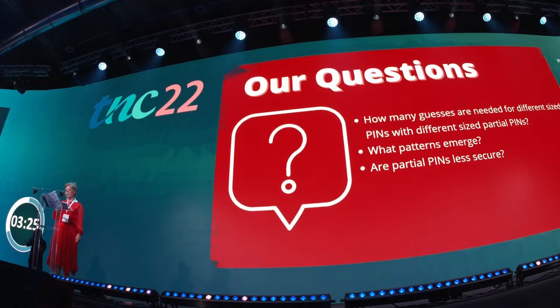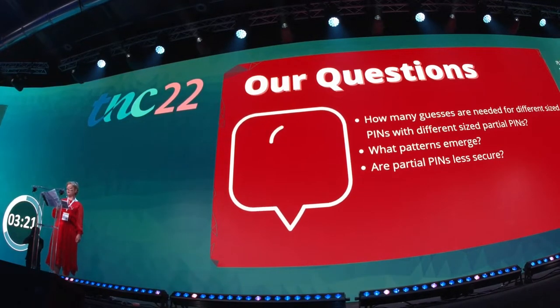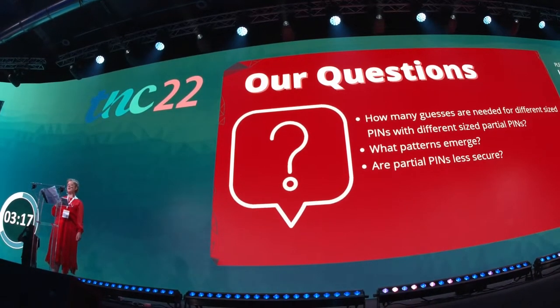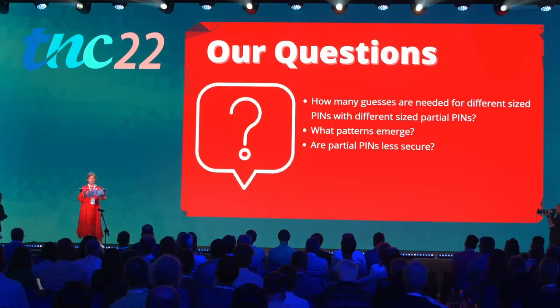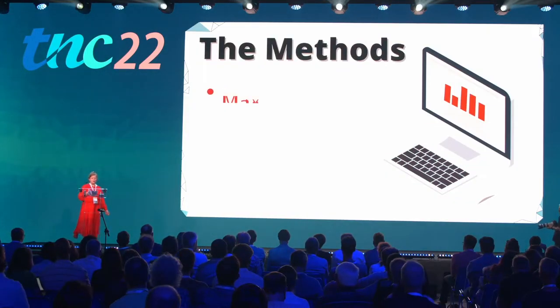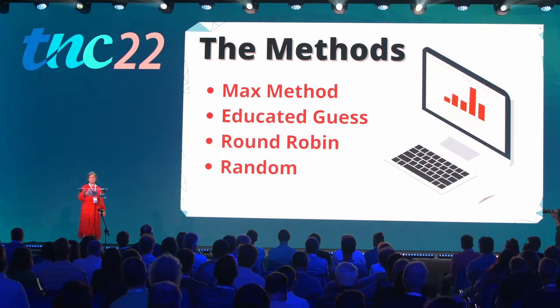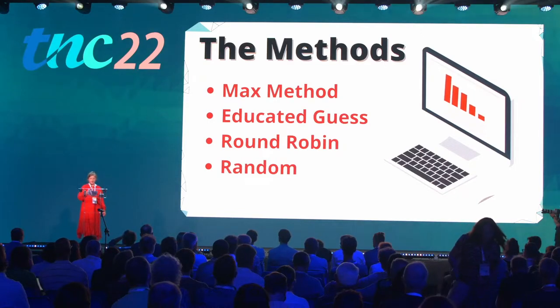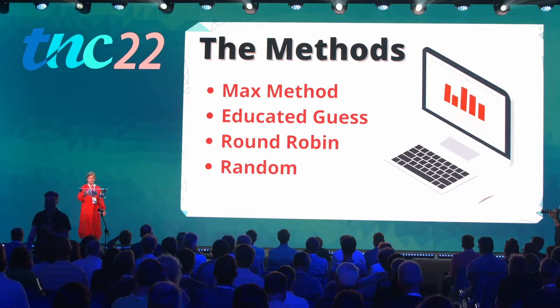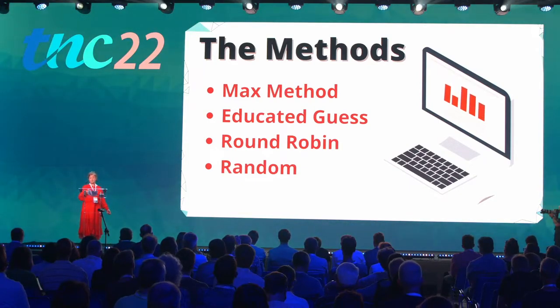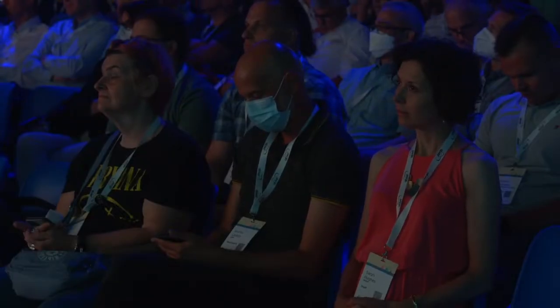For this project we wanted to come up with some strategies for what Alice is planning to do, looking at different PIN and partial PIN size combinations, noting how many guesses are needed and what patterns emerge. Our motivation is that the theory behind this has not been looked into in great detail before, and it is also hard to get a hold of real-world data about how insecure partial PINs are. We coded up four different methods: the max and educated guess methods look at the frequency and distribution respectively of the numbers left in the PIN list, making informed guesses as they go. Round robin starts at zero, ending at nine for each digit in each position in sequence, and random, as the name suggests, just randomly guesses numbers. All methods delete incorrect guesses from the PIN list as they guess.